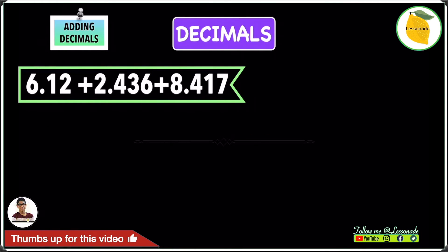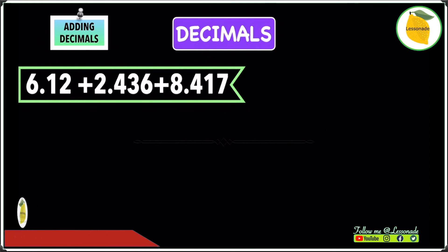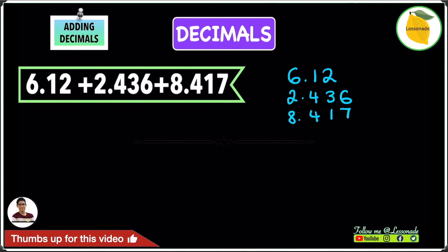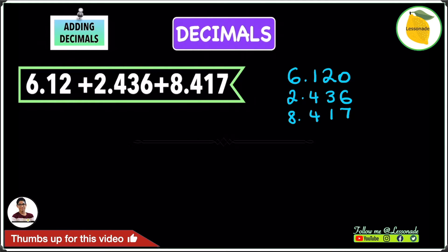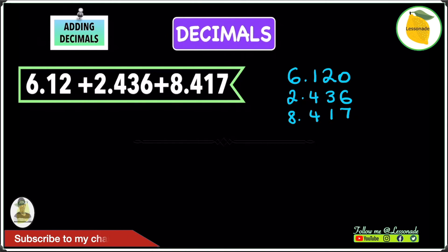Now let's look at this example. This time we're adding three numbers: 6.12 plus 2.436 plus 8.417. Write these numbers down and arrange them with the decimal points lined up. Notice there's a space without any numbers — we add a zero at the end, since adding a zero does not change the value of the decimal. So we have 6.120 plus 2.436 plus 8.417.